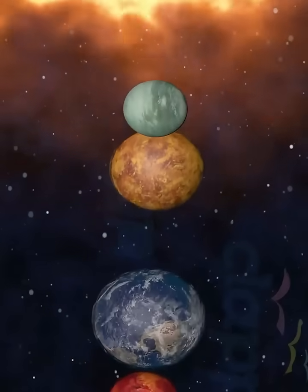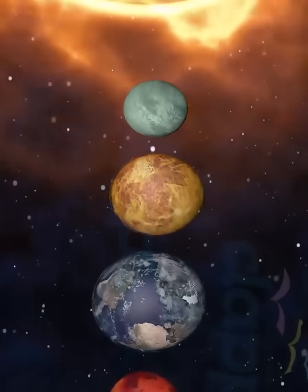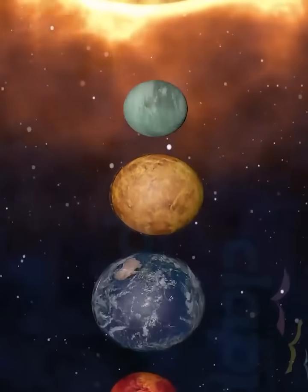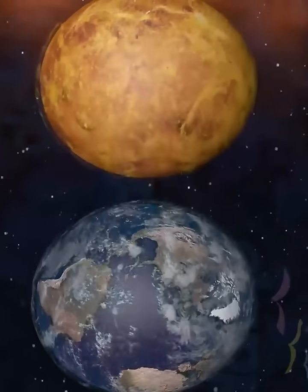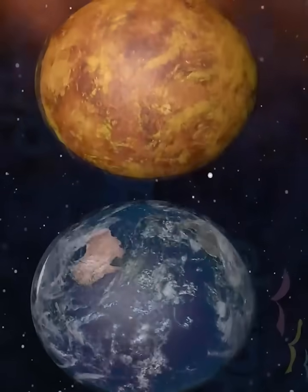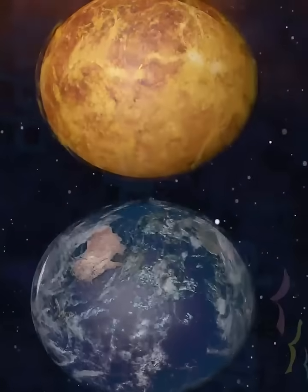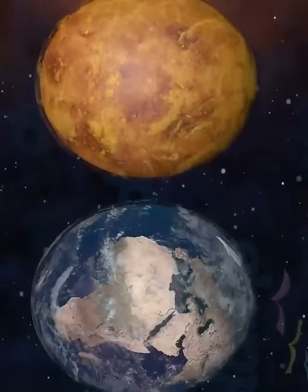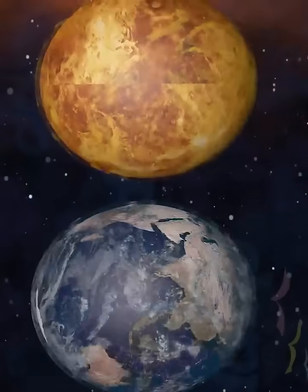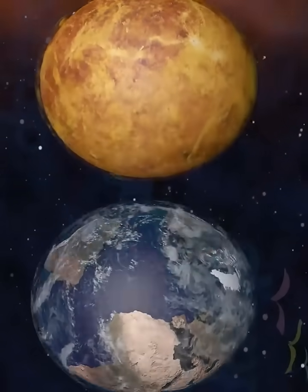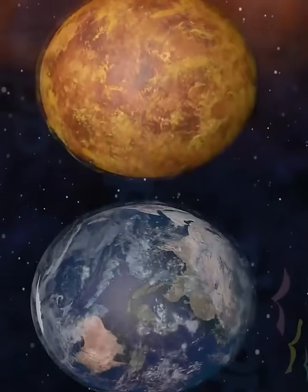Venus is one of the four terrestrial planets in the solar system, meaning that it has a rocky body like Earth. It is similar to Earth in size and mass, and is often described as Earth's sister planet. The diameter of Venus is 12,103.6 kilometers, only 638.4 kilometers less than Earth's, and its mass is 81.5% of Earth's.